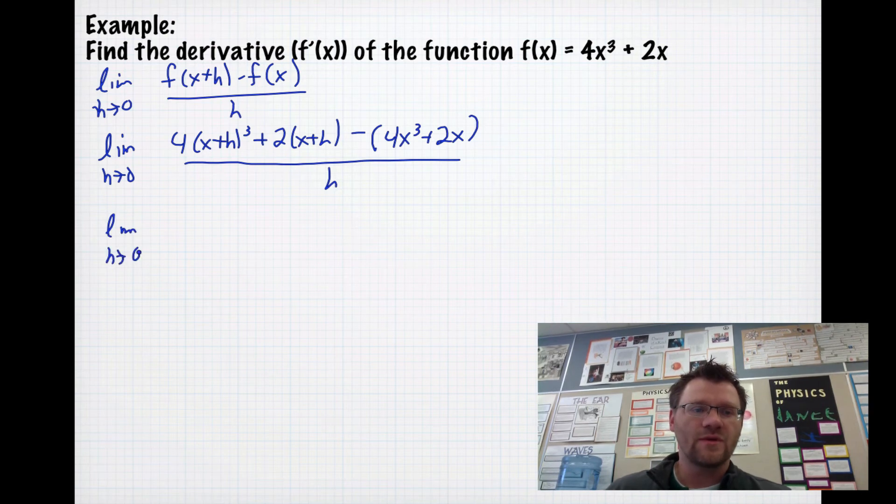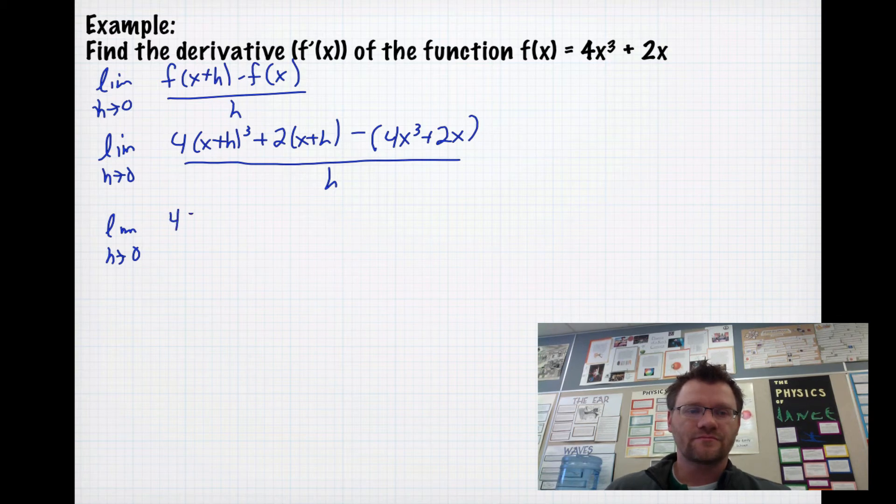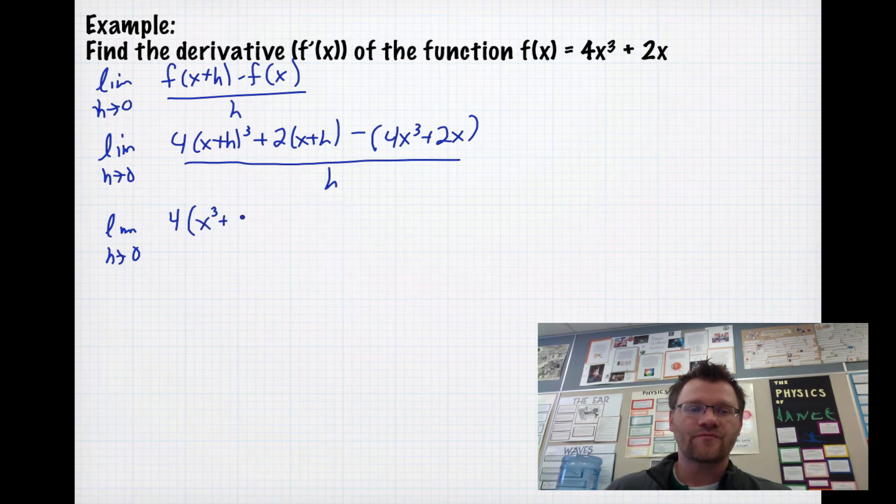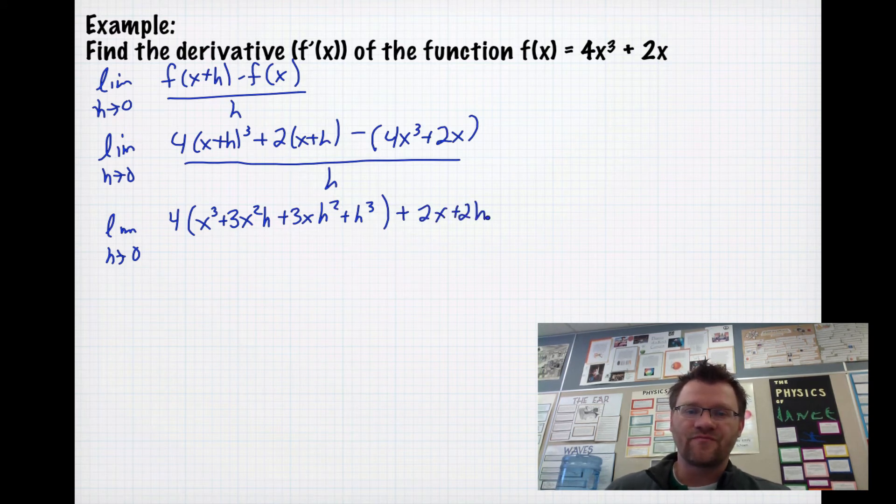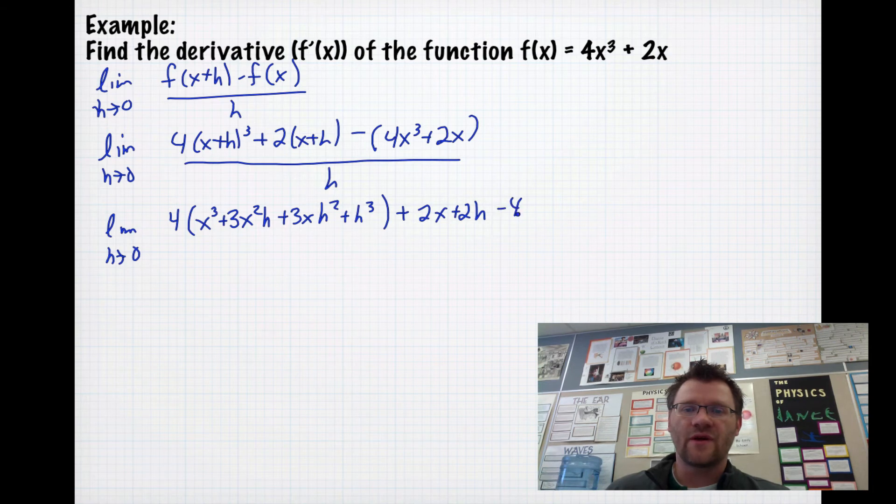We get the limit as h approaches 0. We need to cube x+h before we multiply it by 4. If you multiply x+h by itself 3 times, you get x³ + 3x²h + 3xh² + h³. Then we also have 2 times (x+h), so we have 2x + 2h. And we have -4x³ and -2x.